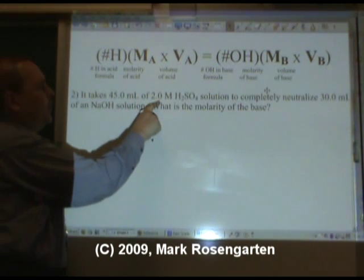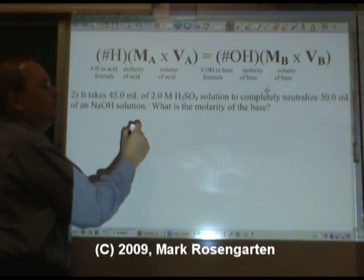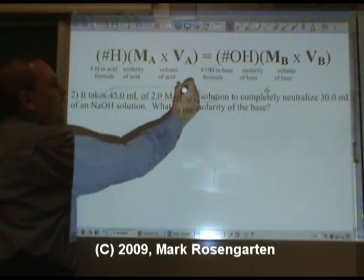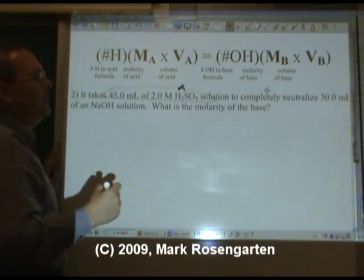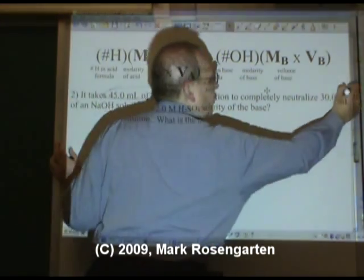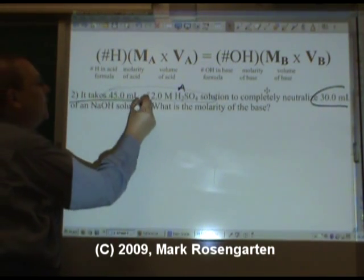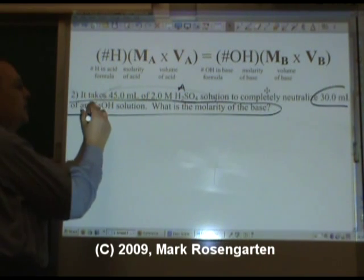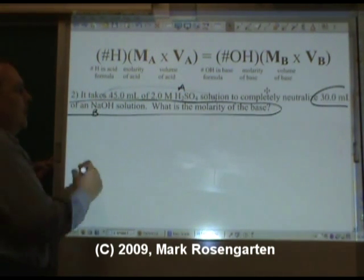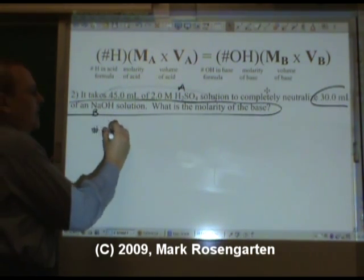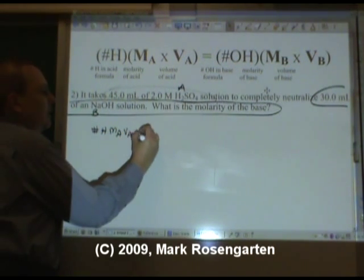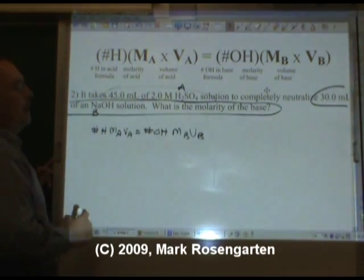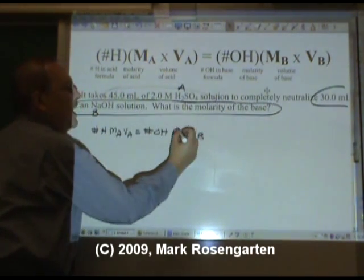It takes 45.0 milliliters of 2.0 molar H2SO4 solution. Well this starts with hydrogen. That means that's our acid. To completely neutralize 30.0 milliliters of an NaOH solution, what is the molarity of the base? That's all the stuff we need about the base. So the formula is number of H's MAVA equals number of OH's MBVB, and we're trying to find the molarity of the base.